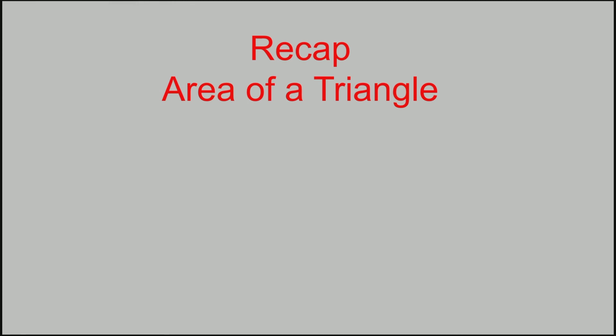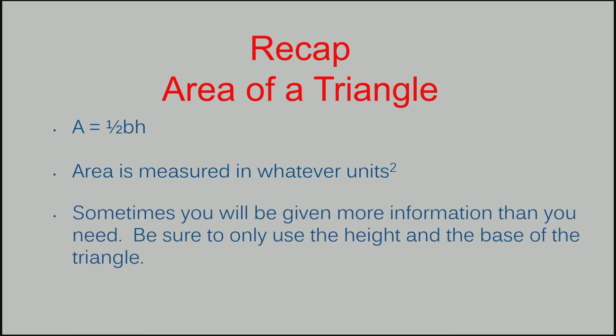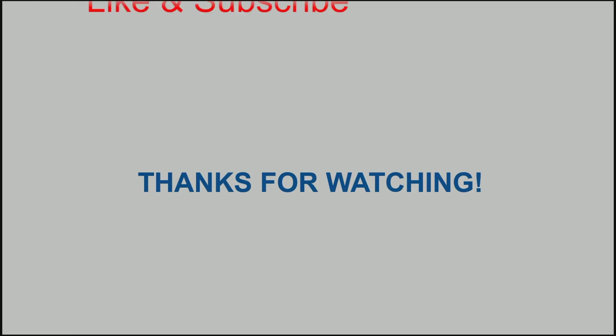Now let's recap how to find the area of a triangle. The formula for area of a triangle is one half base times height. When finding the area of a triangle, you want to make sure that you are using whatever units squared in your answer. It doesn't matter what units your triangle was measured in, they could have been centimeters, inches, feet, miles, yards, anything, just make sure they're squared at the end. Sometimes you're going to be given more information than you need, but be sure to only use the height and the base of the triangle. Remember that you're going to find that by finding the two lines that are at exactly 90 degrees from each other. That's all for today, thanks for watching, and if you like this video don't forget to like it and subscribe.